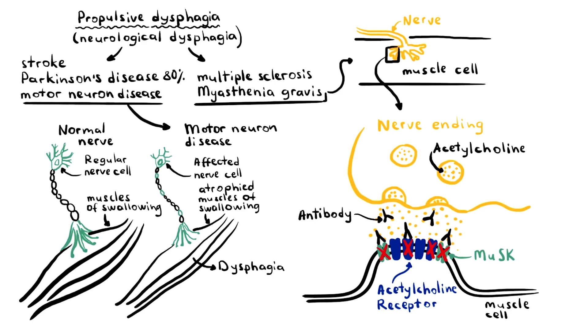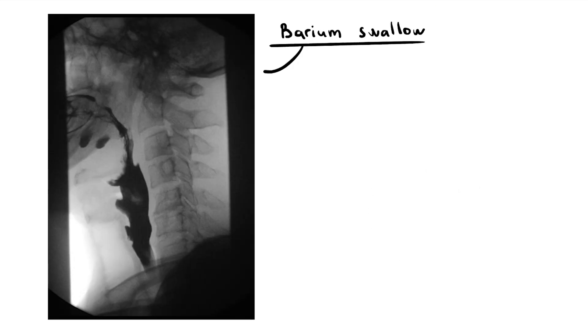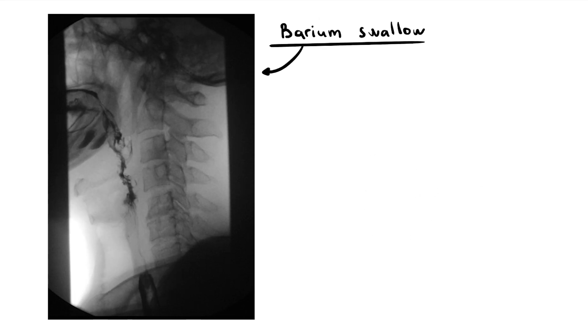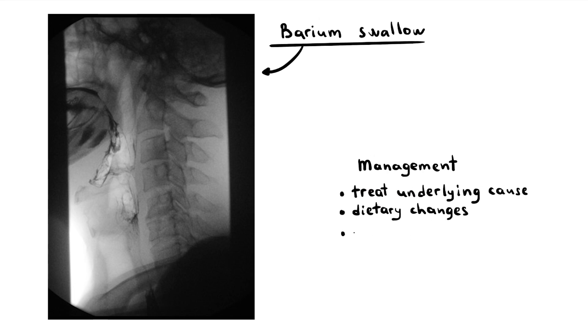The initial study for suspected oropharyngeal dysphagia is a modified barium swallow with both a liquid and a solid phase to help identify the underlying cause. Management strategies include treating the underlying cause, dietary changes, and a swallowing exercise program implemented with a speech pathologist.